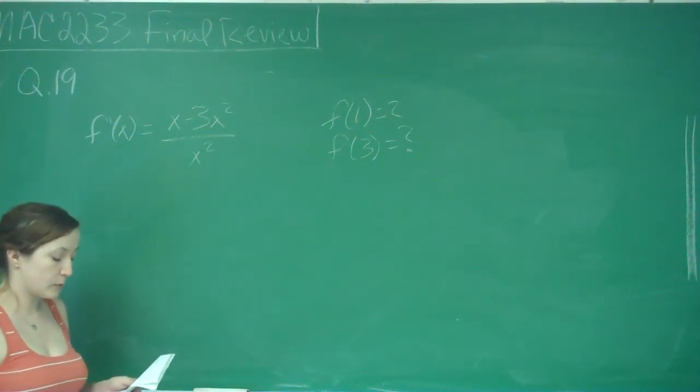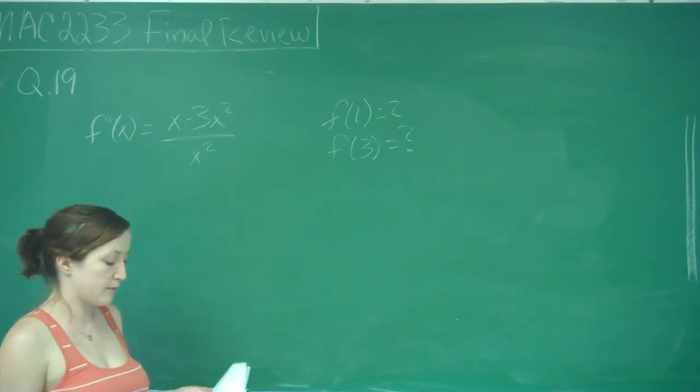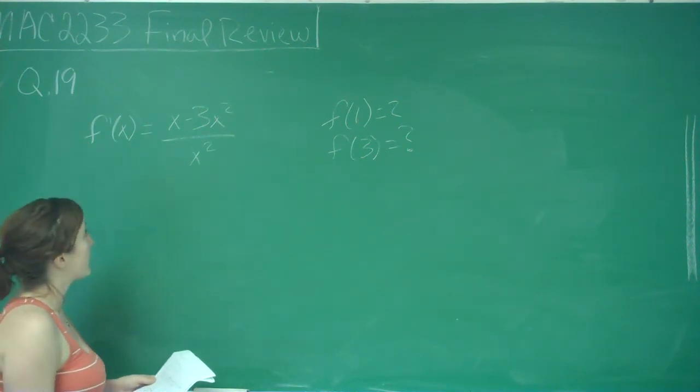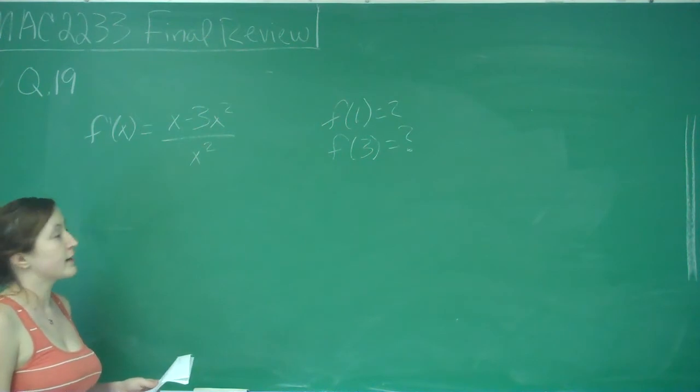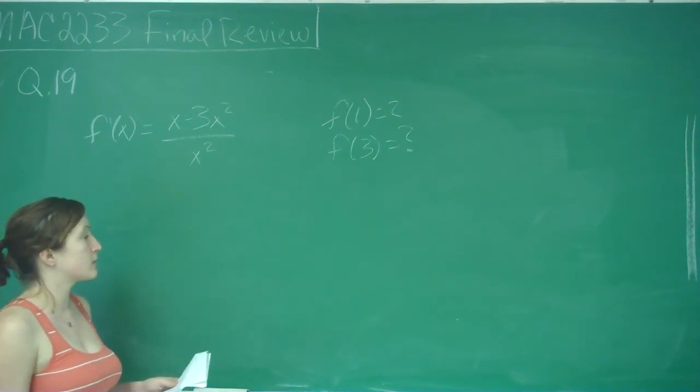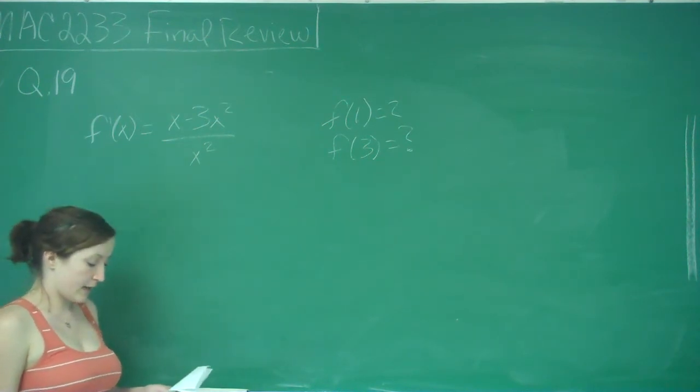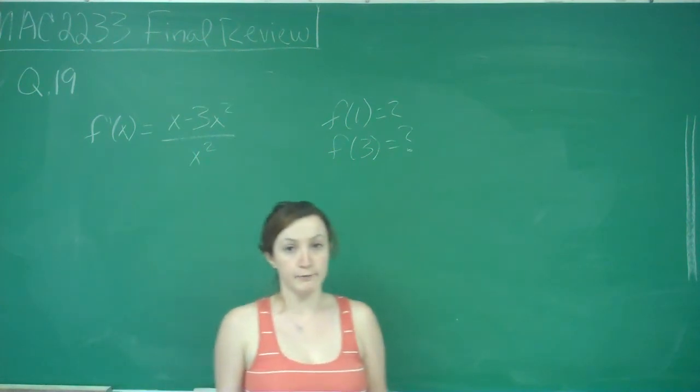This is question 19. It says the slope of the tangent line to the curve y = f(x) at any point is given by f'(x) = (x - 3x²)/x². If f(1) = 2, find f(3).